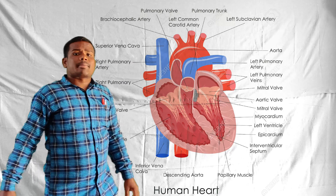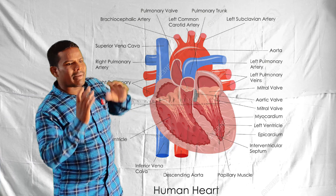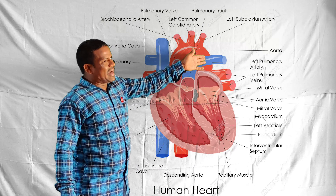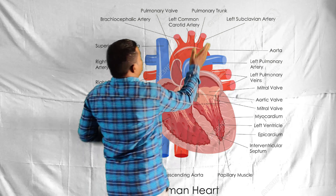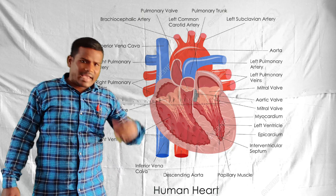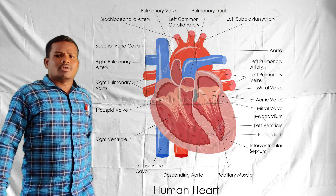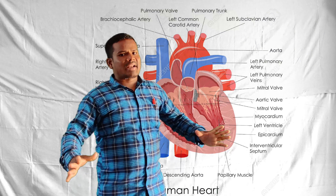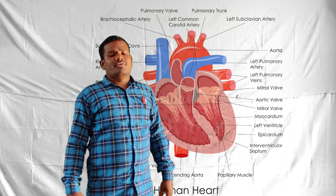The left atrium opens into the left ventricle. Left atrium and left ventricle are separated by the left atrio-ventricular septum. At this septum there is a bicuspid valve, through which blood flows from the left atrium to the left ventricle. From the left ventricle, the largest artery - the systemic aorta - originates. At the region of the systemic aorta there is a valve called the systemic valve, through which oxygenated blood is supplied to every part of the body.